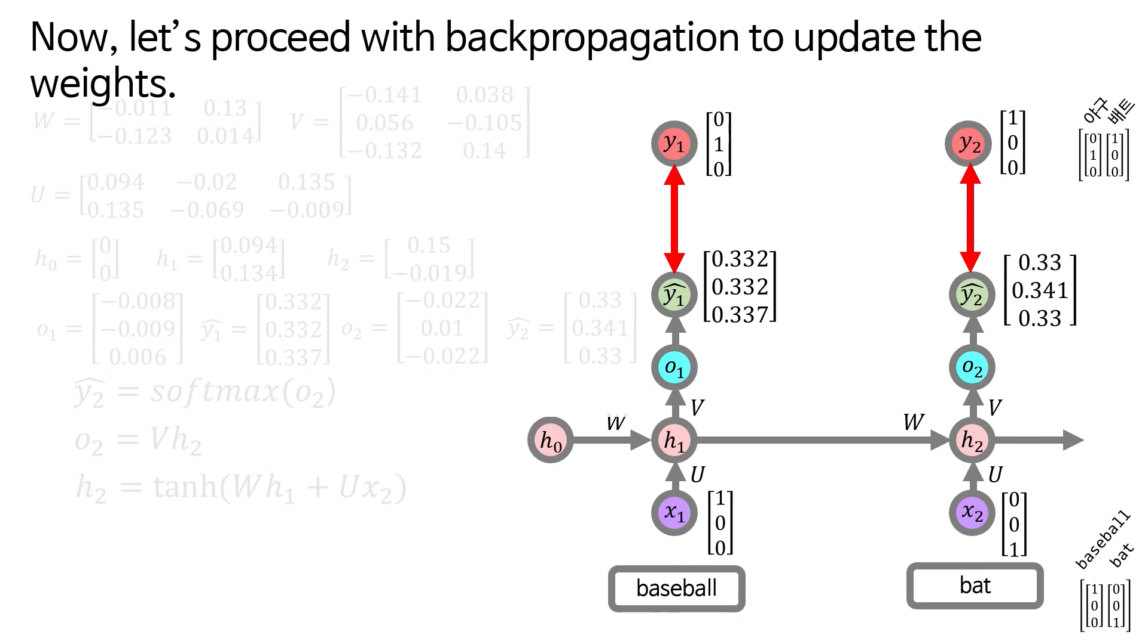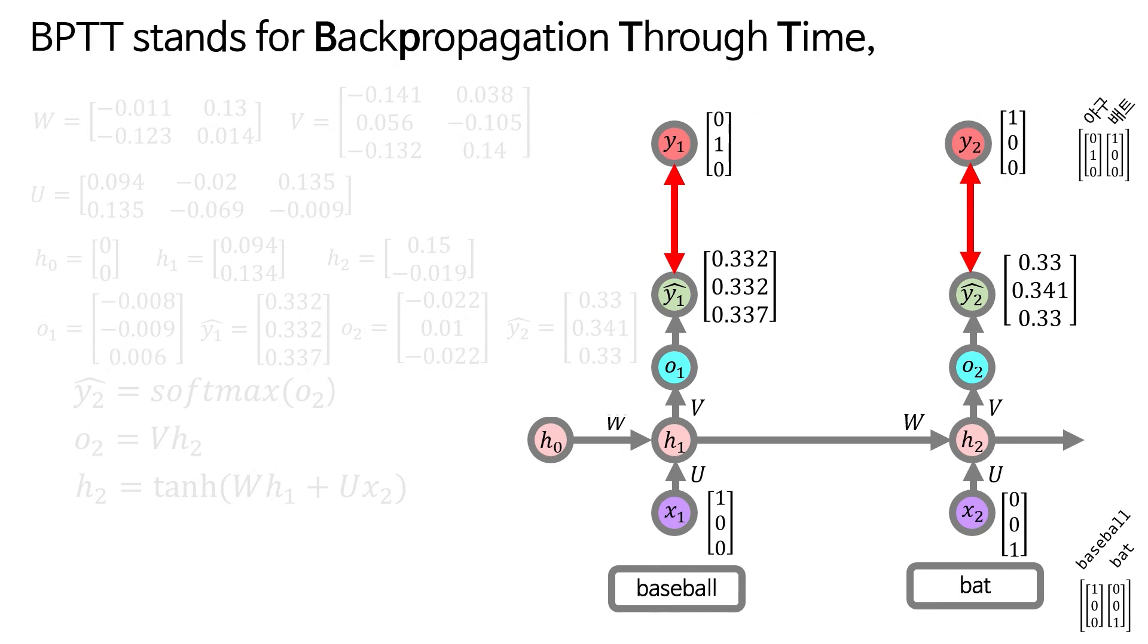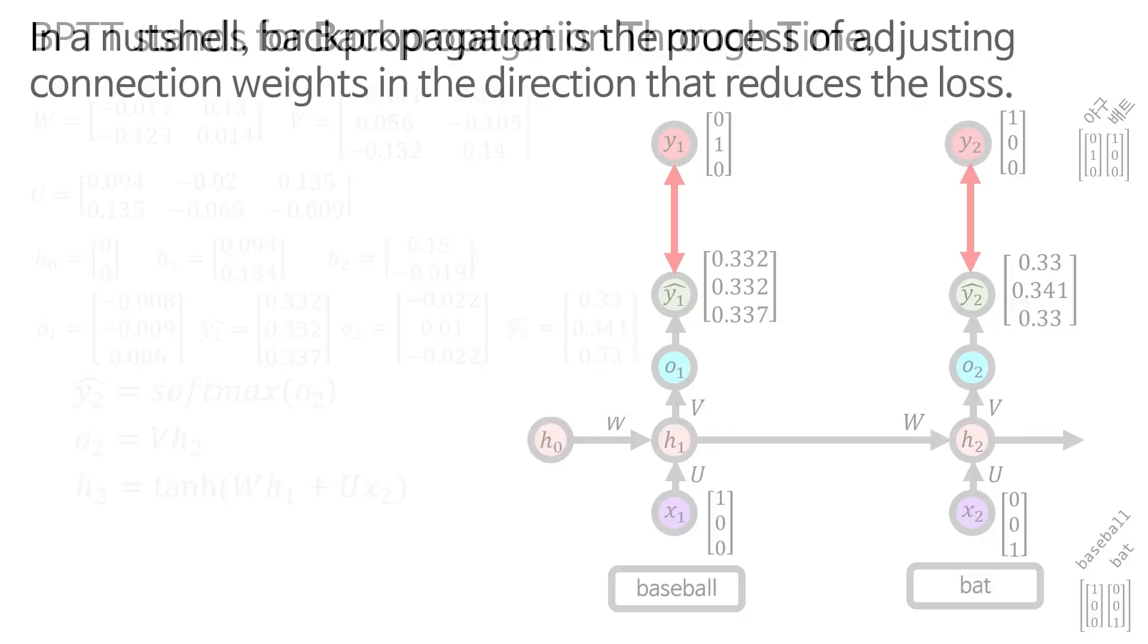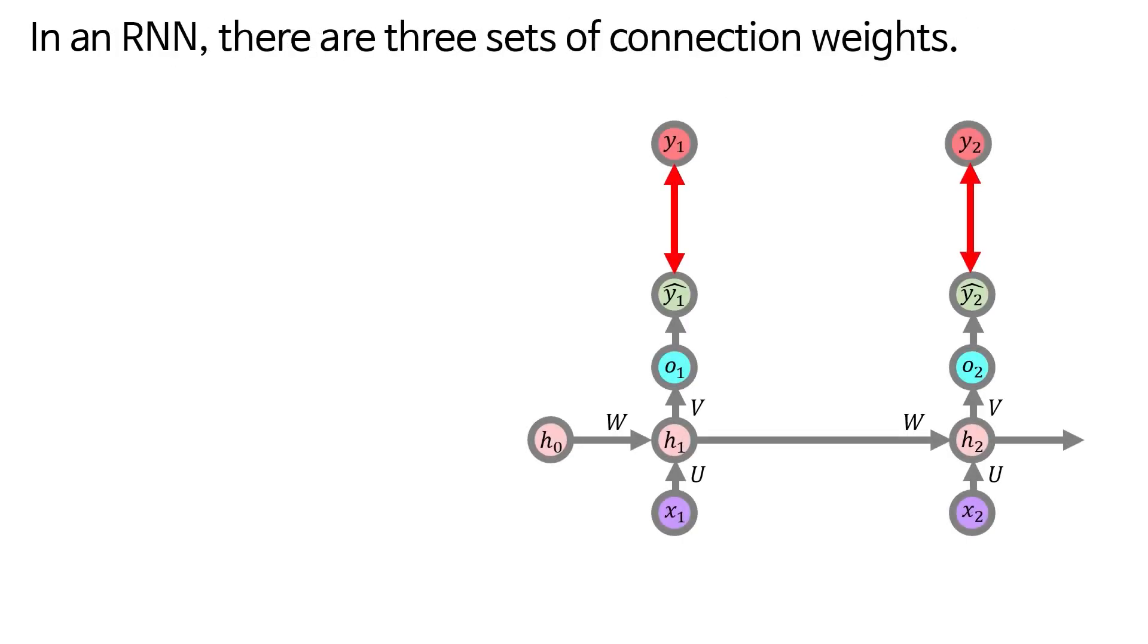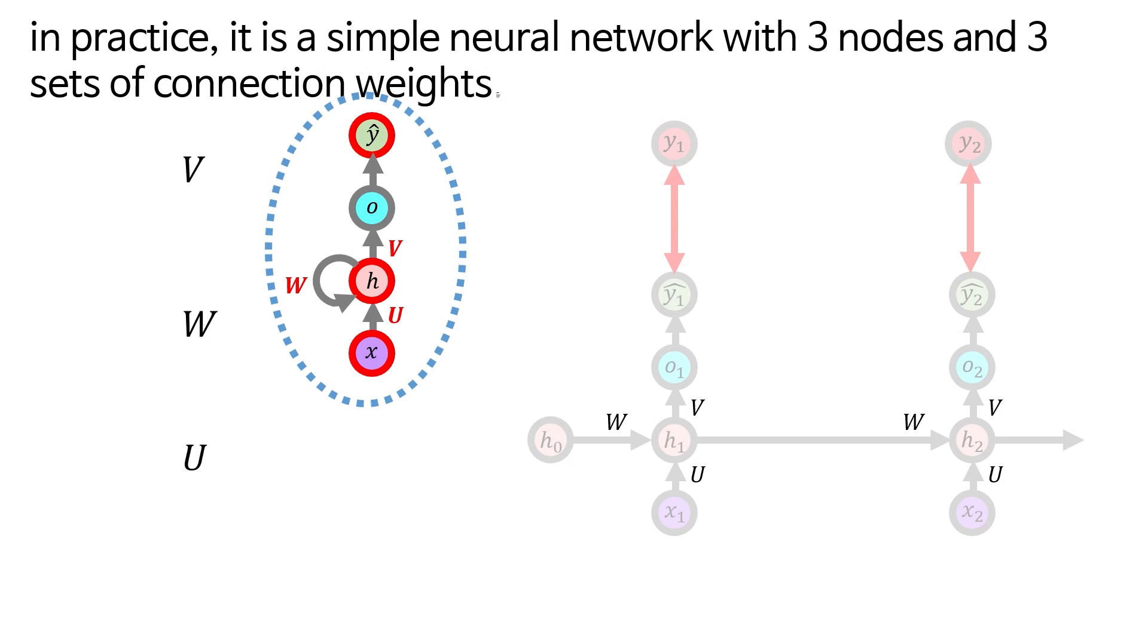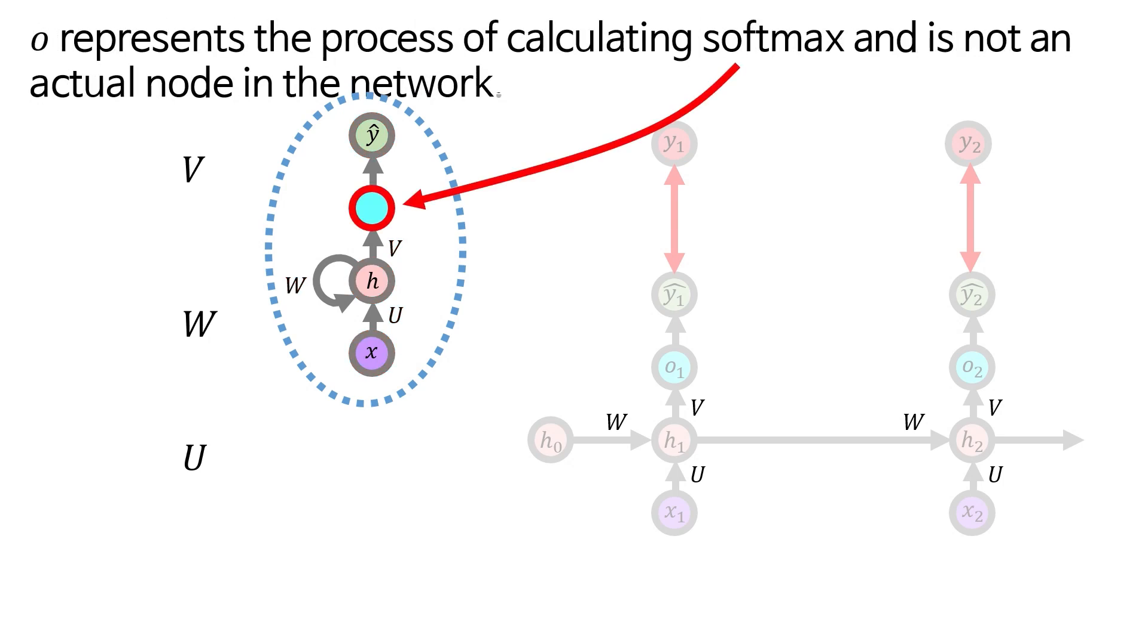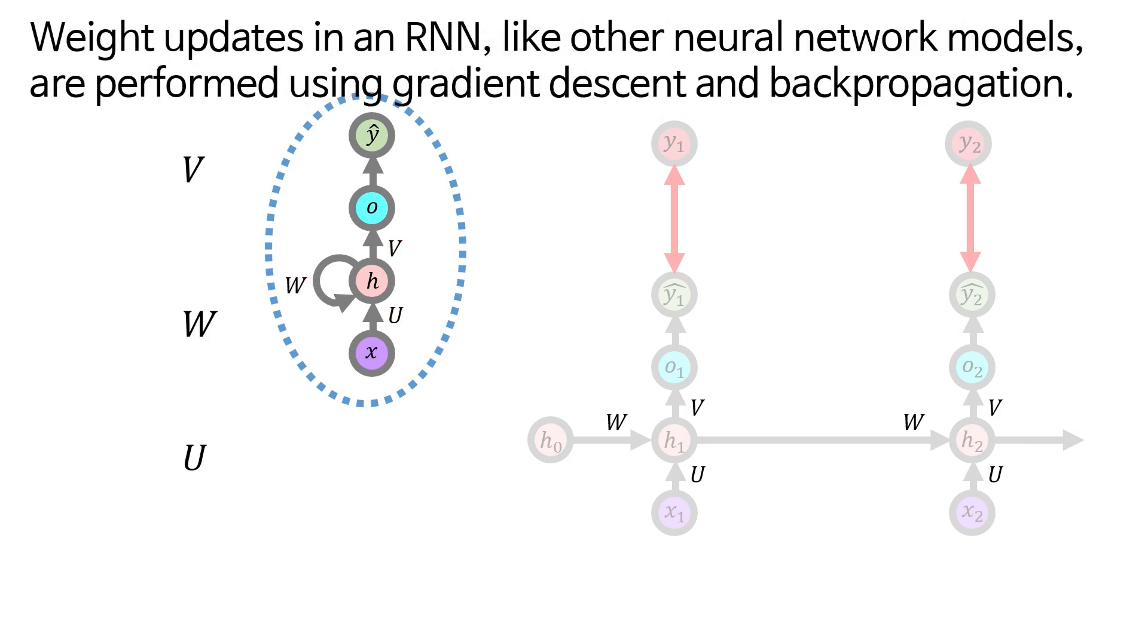Now, let's proceed with backpropagation to update the weights. In RNNs, backpropagation is often referred to as BPTT. BPTT stands for backpropagation through time. In a nutshell, backpropagation is the process of adjusting connection weights in the direction that reduces the loss. In an RNN, there are three sets of connection weights. While this RNN may appear complex when unrolled over time, in practice, it is a simple neural network with three nodes and three sets of connection weights.